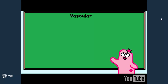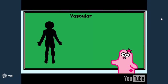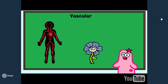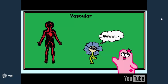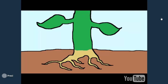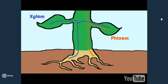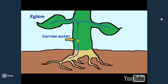Recall that in the human body, your vascular system includes arteries and veins. Well, plants don't have arteries or blood. When we're talking about a vascular system in plants, we're talking about two major types of tubes or vessels called the xylem and phloem. The xylem carries water and is found throughout a vascular plant. Water is absorbed from the roots and carried upwards. Roots are specially designed to help anchor plants and also to absorb water from the soil.